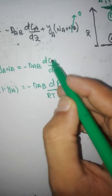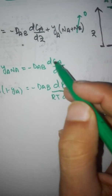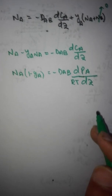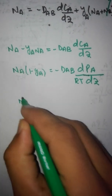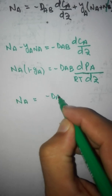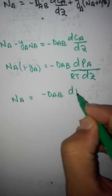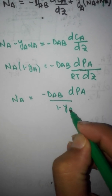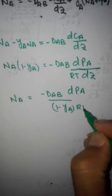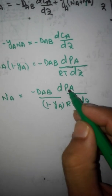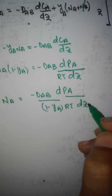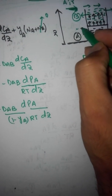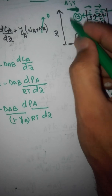So in place of DCA we write DPA by RT. This further simplifies to: NA equals minus DAB times DPA divided by (1 minus YA) times RT times DZ — representing the change in partial pressure with respect to the Z direction.